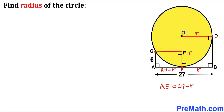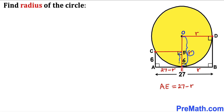In the next step, I have drawn a perpendicular from point C onto radius OE at point F. We can see that AEFC is a rectangle, so EF must equal AC. Since AC is 6, EF is 6 units. Now, OE is the radius r and EF is 6, so OF = r − 6.